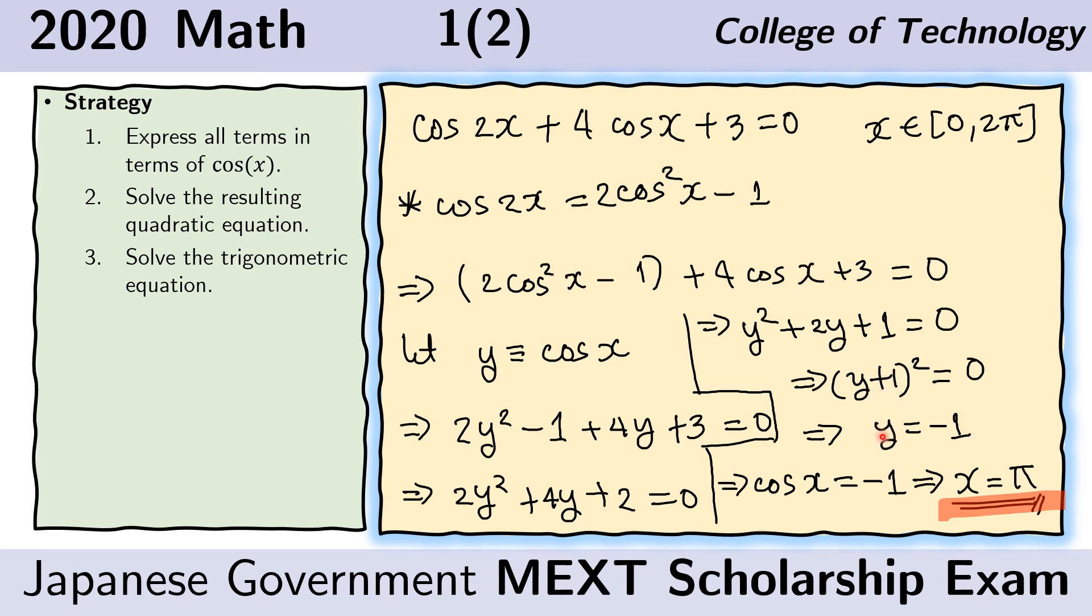Now because we know that y is originally cosine of x, we just replace this with cosine of x and we get this trigonometric equation. Now we just have to recall that in this interval between 0 and 2π, the cosine of x is negative 1 only once. And that happens when x is π. And we will know this if we try to graph the cosine of x or if you recall the definition of cosine from the unit circle.